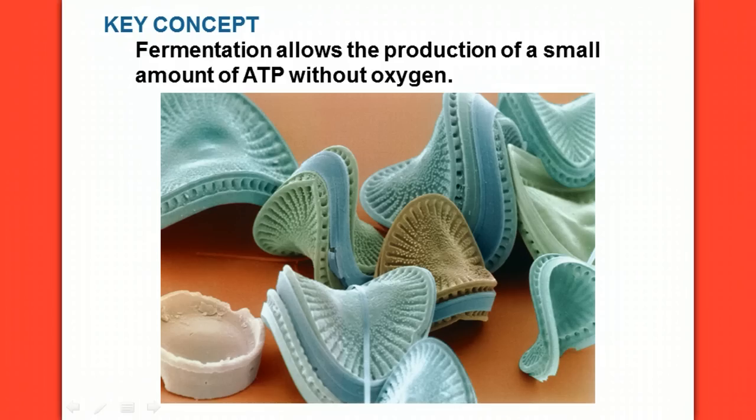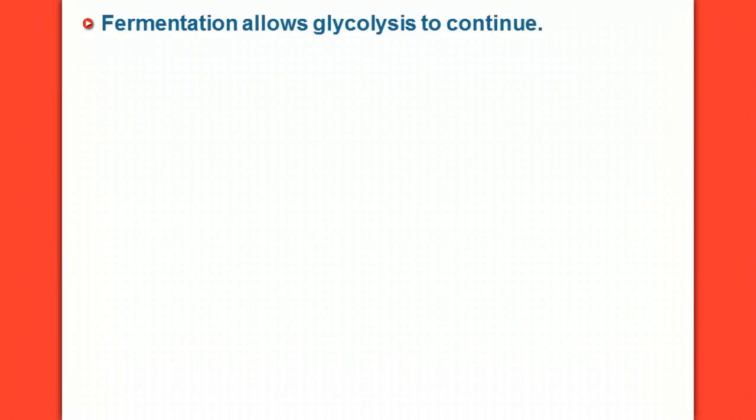So now we're going to take a moment and look at what happens when oxygen is not available. In our video, fermentation is basically the process that's used to make a very small amount of ATP, but actually without oxygen, so anaerobically. Fermentation allows glycolysis to continue.